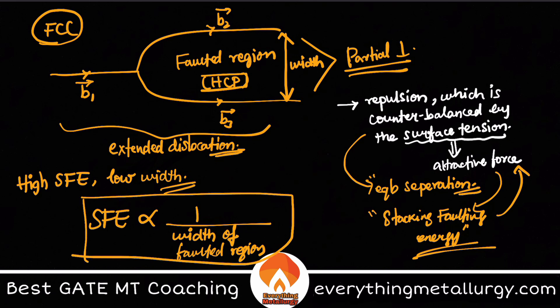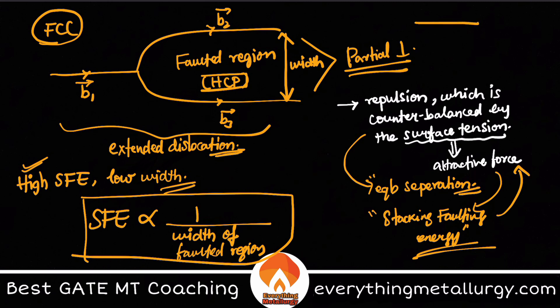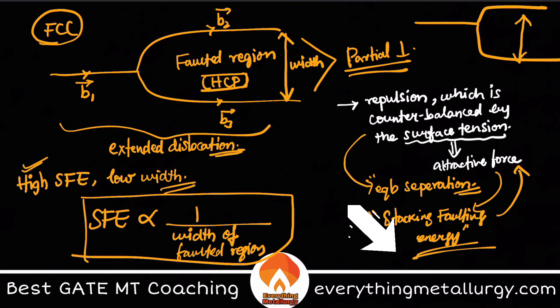Based on this, if I have high SFE I have low width, so the extended dislocation can easily move and easily cross slip. Because of that easy cross slip, there will be less strain hardening in the material. On the other hand, a material with low SFE has a very high width of the faulted region, making the dislocation very difficult to cross slip. This itself acts as an obstacle for other dislocations, helping in rapid strain hardening.